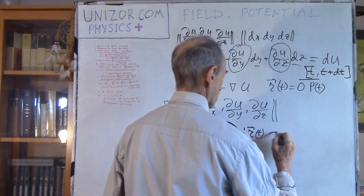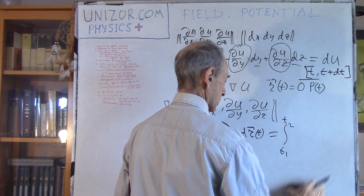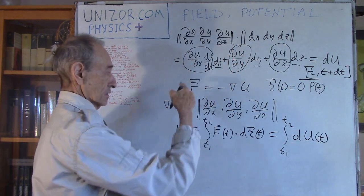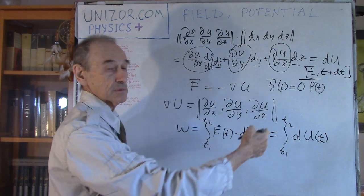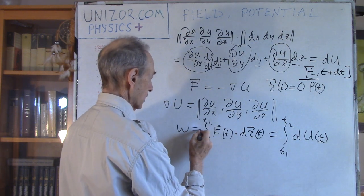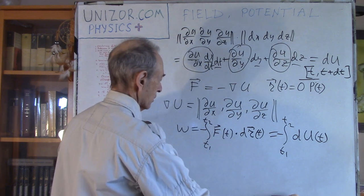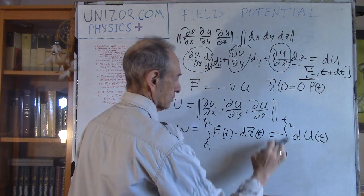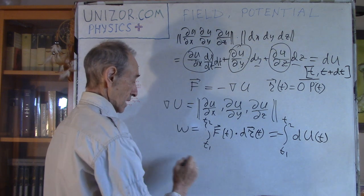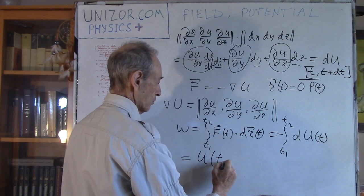So under the integral we have the full differential of U as a function of t. The integral of a differential is just the function evaluated at the limits: U at t2 minus U at t1. With the minus sign in front from F = -∇U, the work integral becomes -(U(t2) - U(t1)).